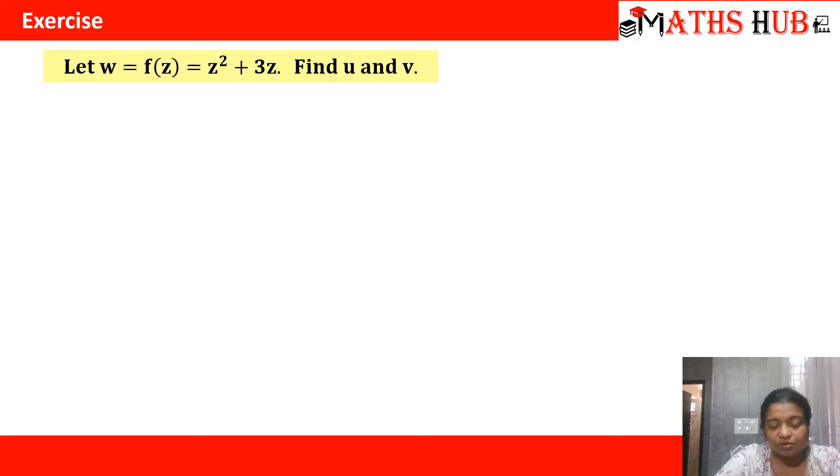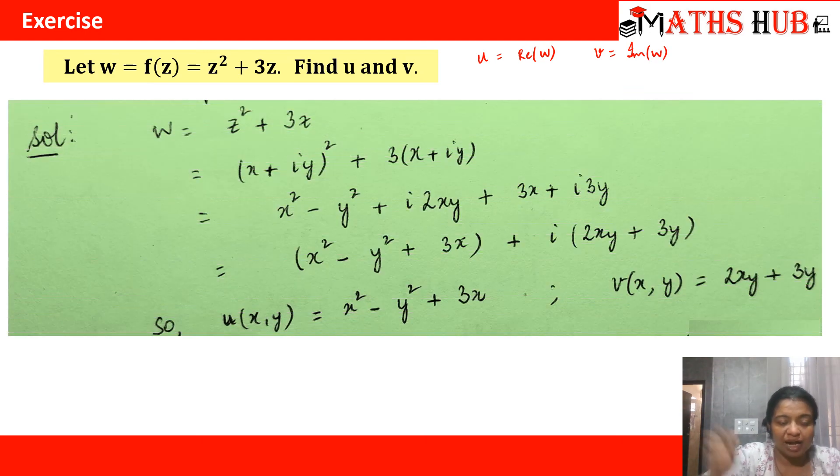Now, a very elementary question: How to find out the real and imaginary parts of any complex function? Suppose f of z is given to us as z squared plus 3z, and you have to calculate u and v. u is the real part of f of z, and v is the imaginary part. Instead of z, we replace it with x plus iota y. So z becomes (x plus iota y) squared plus 3 times (x plus iota y). When you open up the square, you get x squared minus y squared plus iota times 2xy plus 3x plus 3 iota y. You can collect all the real variables: x squared minus y squared plus 3x. And when you combine all the imaginary parts, we get iota common, 2xy plus 3y. From here, the real part is x squared minus y squared plus 3x, and the imaginary part is 2xy plus 3y.